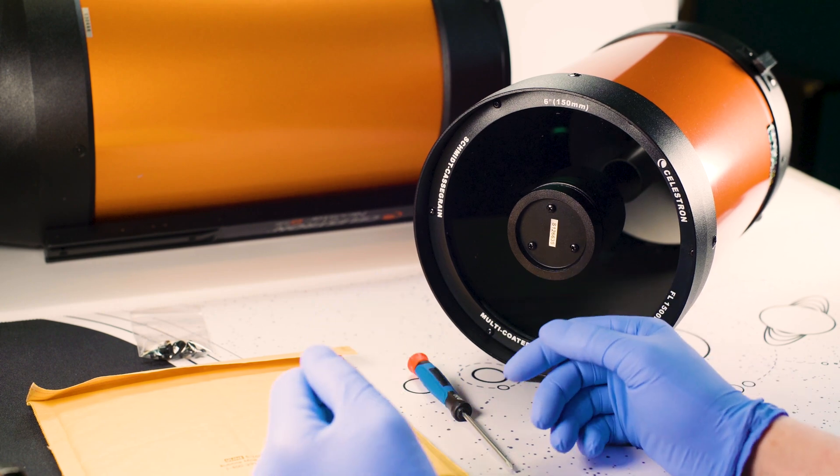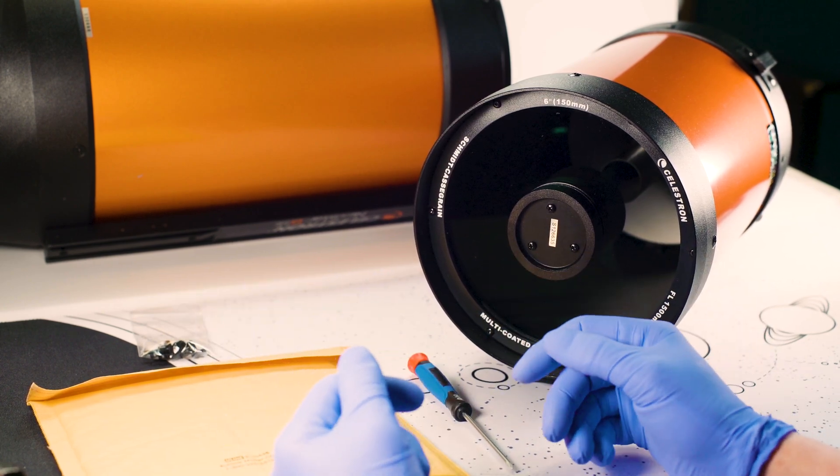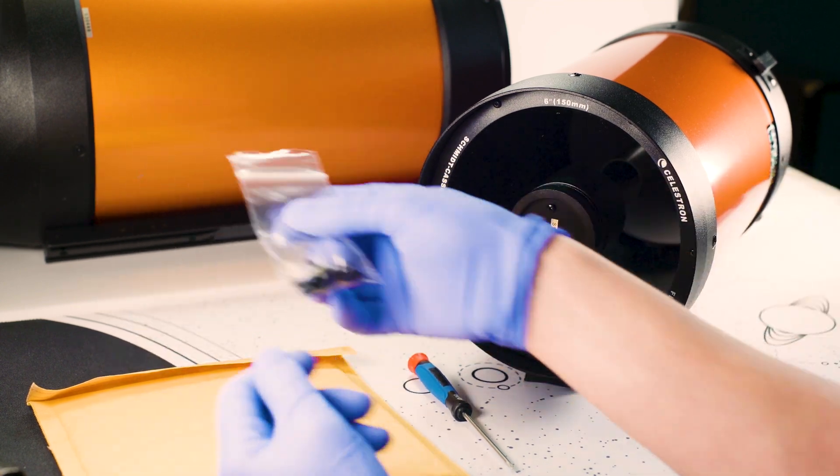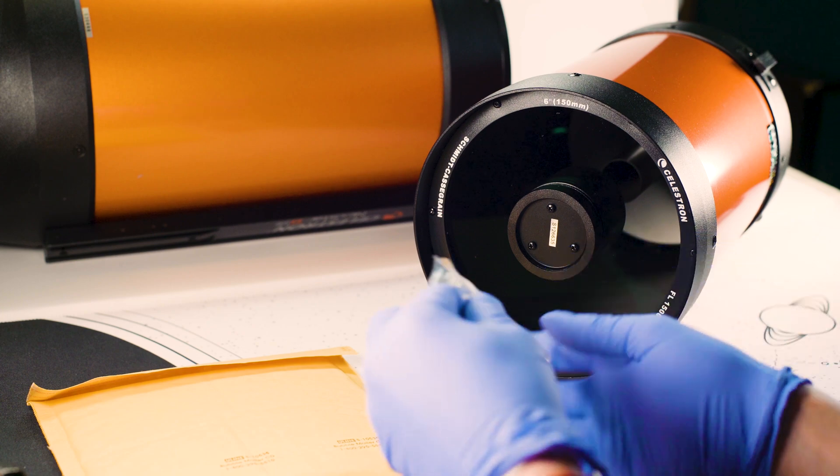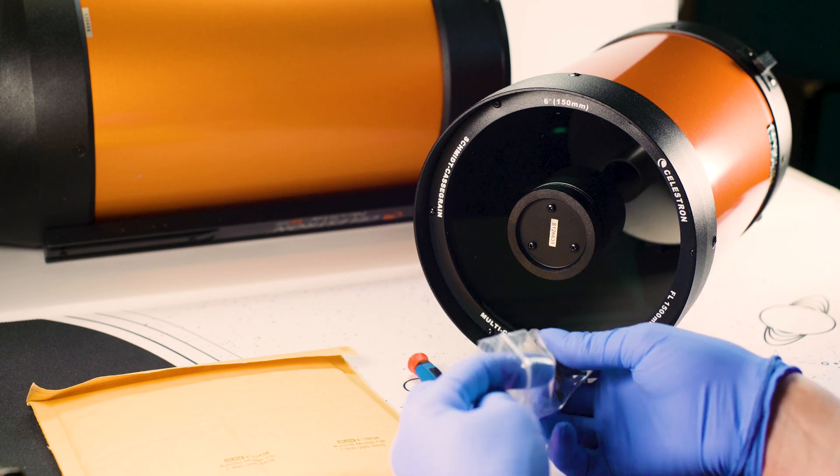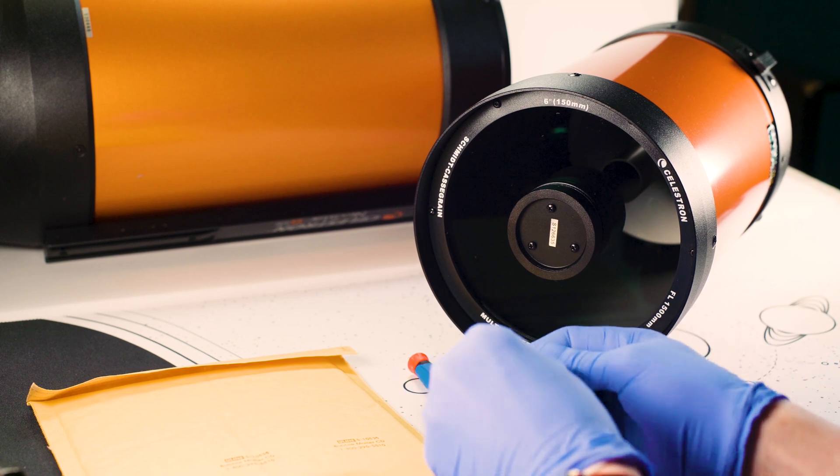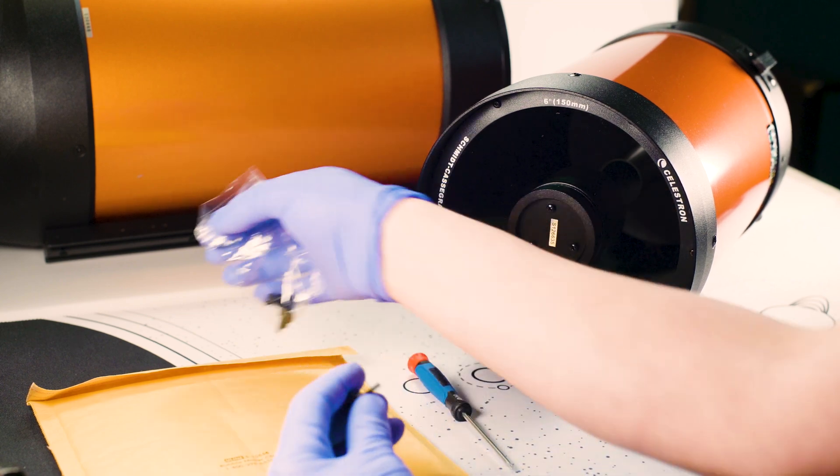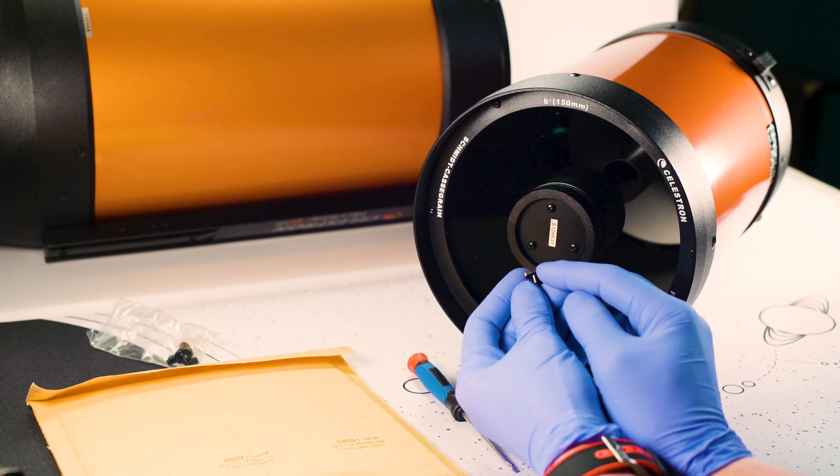So before we get started, let's talk a little bit about what this kit is. This kit comes with three knobs to replace the stock Phillips head adjustment points that are on your SCT telescope. You can see that this has a coin edge bezel that will allow you to adjust this without a tool, so you can just hand tighten it to adjust your collimation.